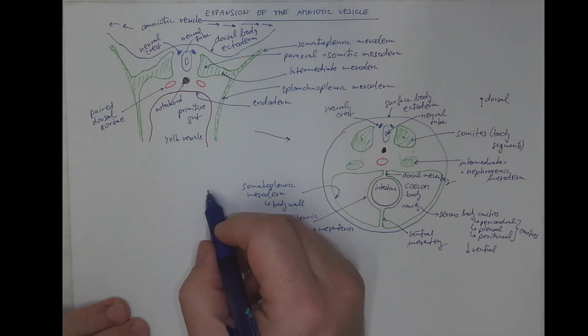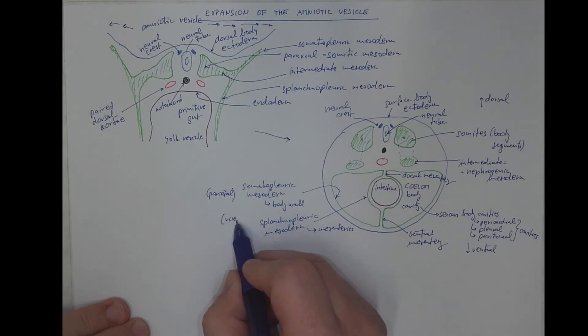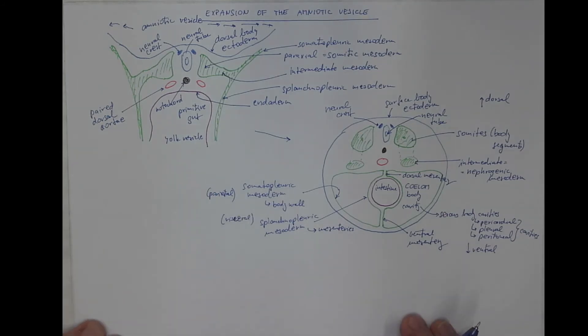Somatopleuric is the parietal layer, while splanchnopleuric is the visceral, the inner layer. And that already resembles the basic form of the embryonic body.